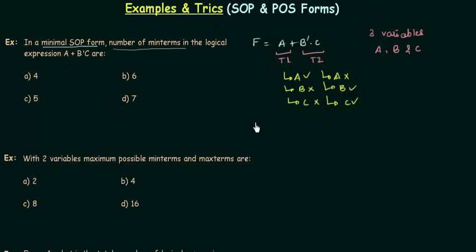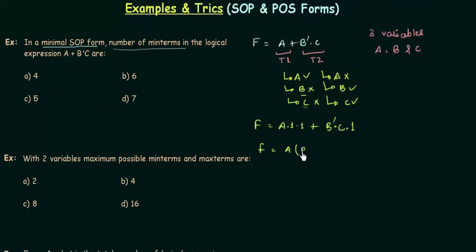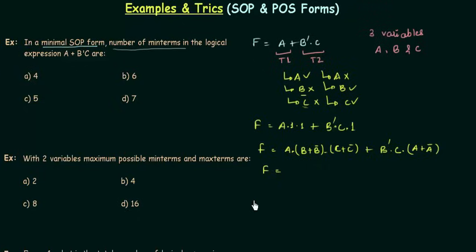In step three, we AND ones for each absent variable. Term one is missing B and C, so we AND one for B and one for C. Term two is missing A, so we AND one for A. Now I can write the one for B as (B or B complement), the one for C as (C or C complement), and for term two the one for A as (A or A complement).